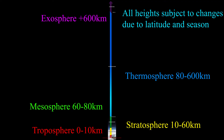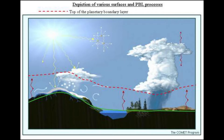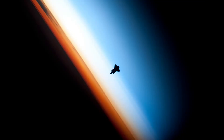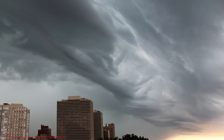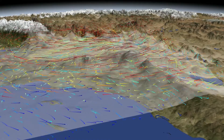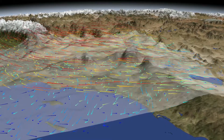The troposphere is the lowest region of the atmosphere, extending from the Earth's surface to a height of about 6 to 10 kilometers. It contains 75% of the atmosphere's mass and 99% of the total mass of water vapor and aerosols. In this photo, you can see the Space Shuttle Endeavour silhouetted against the atmosphere. The orange layer is the troposphere, the white layer is the stratosphere, and the blue layer is the mesosphere. It is important to understand this because the lowest part of the troposphere, where friction with the Earth's surface influences airflow, is the planetary boundary layer, which heavily influences the wind, temperature, and moisture.